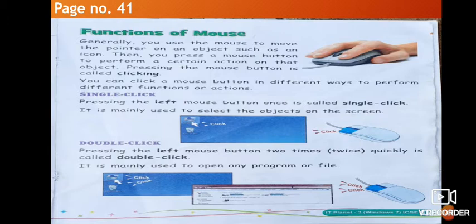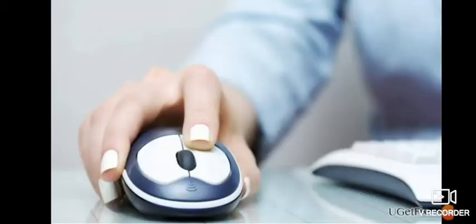You use the mouse to move the pointer on an object such as an icon, then press a mouse button to perform a certain action on that object. Pressing the mouse button is called clicking. You can click a mouse button in different ways to perform different functions or actions.